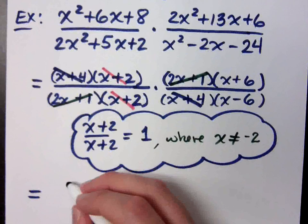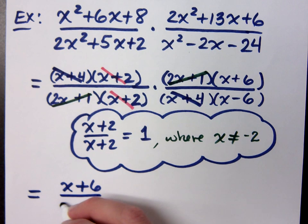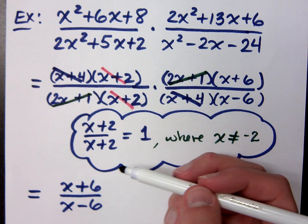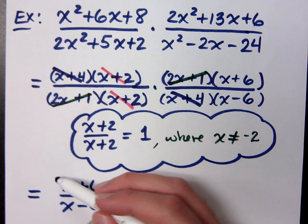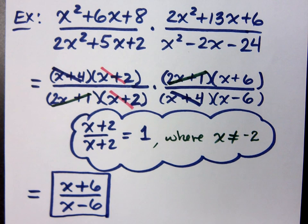2x plus 6 over... Whoa, hold up. I'm left with x plus 6 over x minus 6. Can that reduce any further? These guys are not common factors. They don't have anything that will reduce away, so we're here.